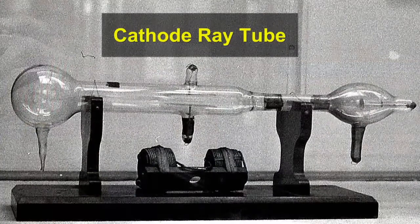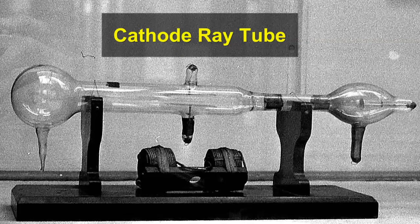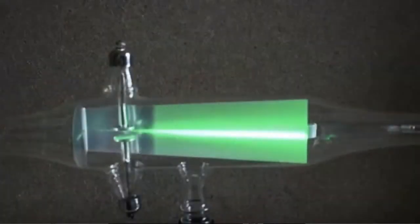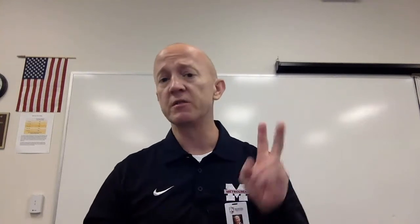Scientists continued to do research in the 1800s through the use of something called a cathode ray tube. A cathode ray tube is a glass tube that has the air pulled out of it — it has a vacuum inside. On either end of this tube there are electrodes: one is called a cathode, and the other is called the anode. They realized that when they connected a high voltage source to these electrodes, a beam would pass across this tube from the cathode end to the anode end. Thus, they called it a cathode ray. By the late 1800s, they were certain of two things: this ray was actually composed of particles, and those particles had a negative charge.